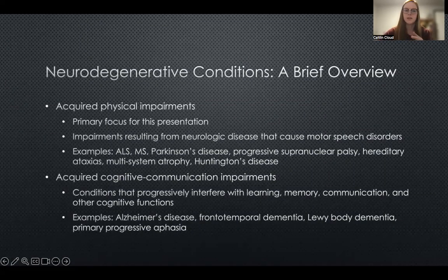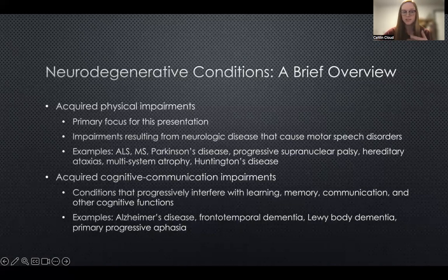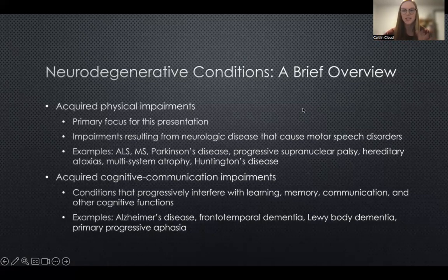There are also acquired degenerative cognitive communication impairments — conditions that progressively interfere with learning, memory, communication, and other cognitive functions. Examples include Alzheimer's disease and other forms of dementia, as well as primary progressive aphasia. Those populations would be a whole other presentation — too much to cover tonight. So we're focusing primarily on those degenerative motor impairments.